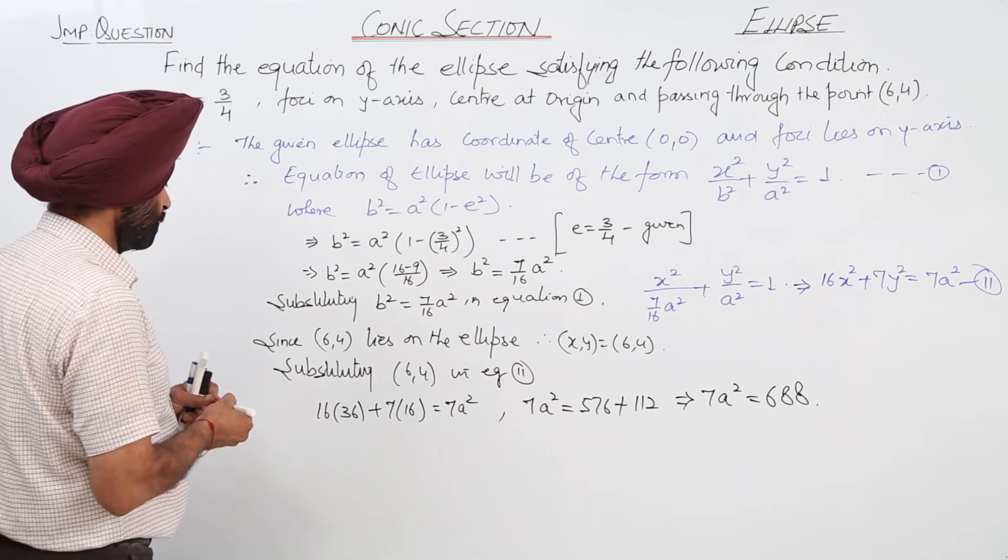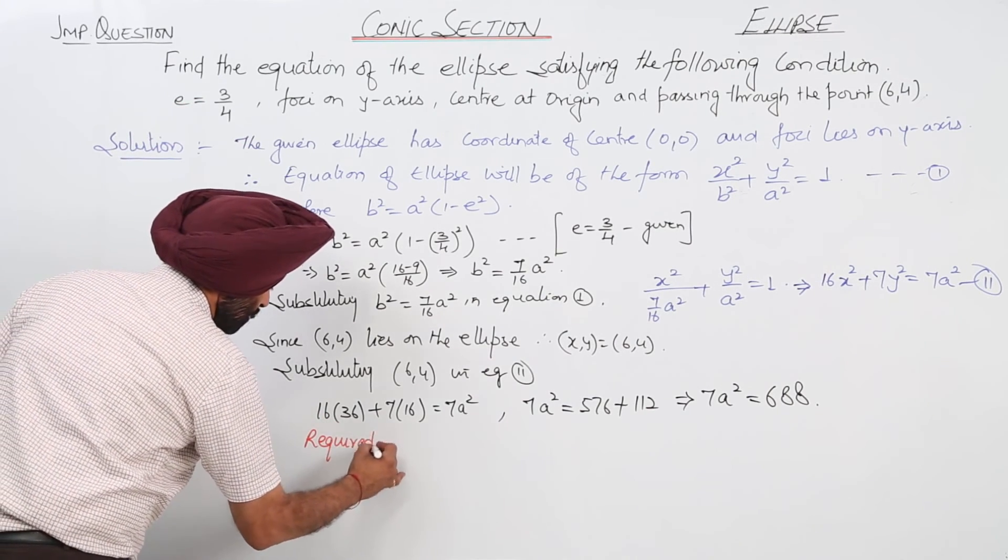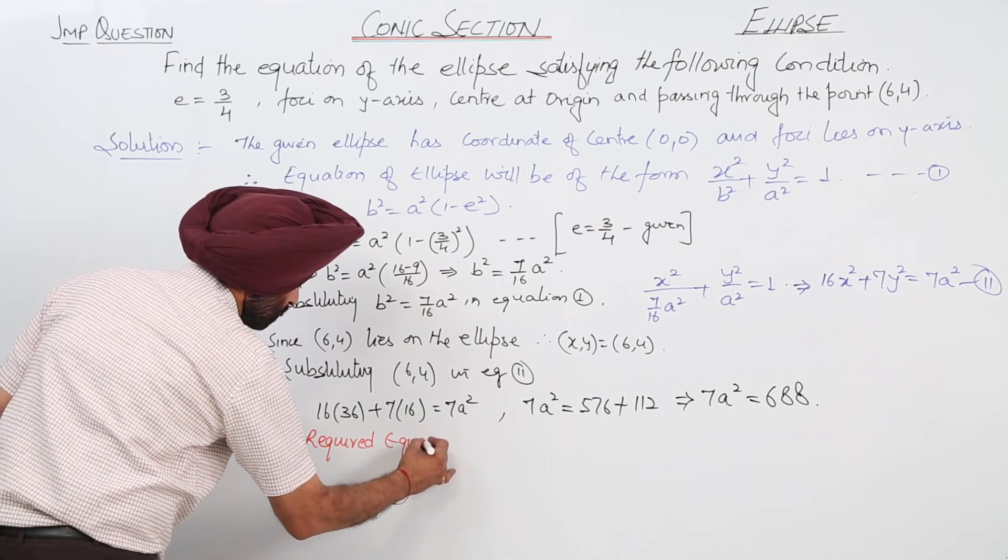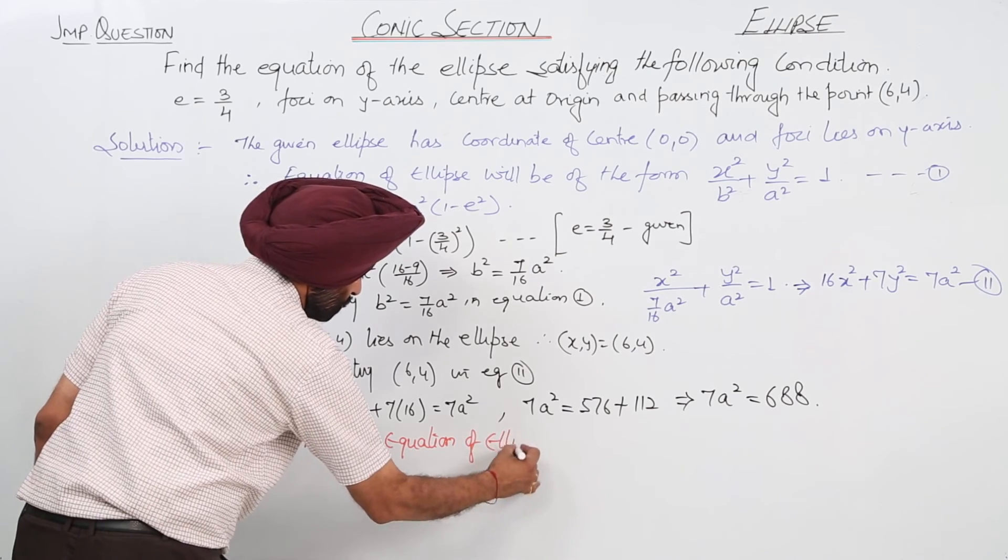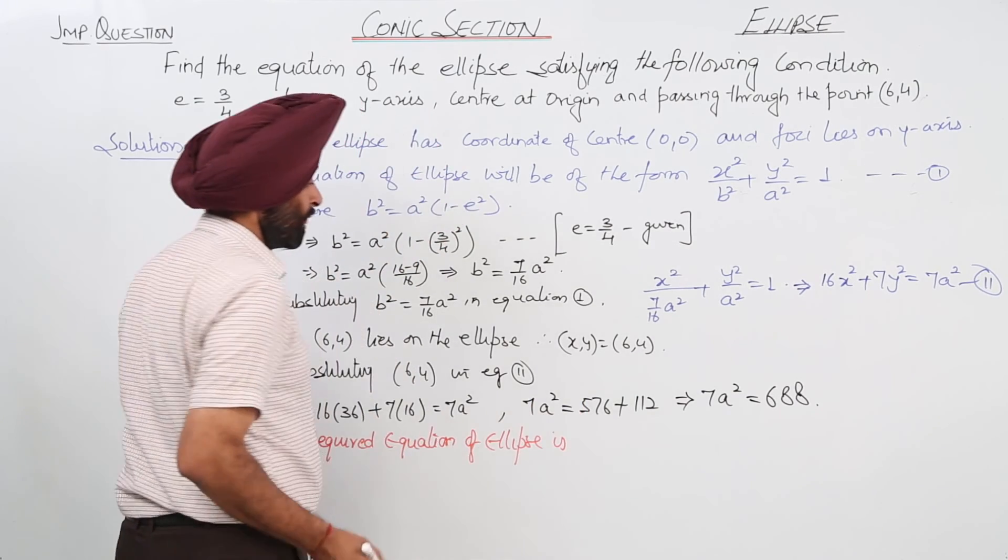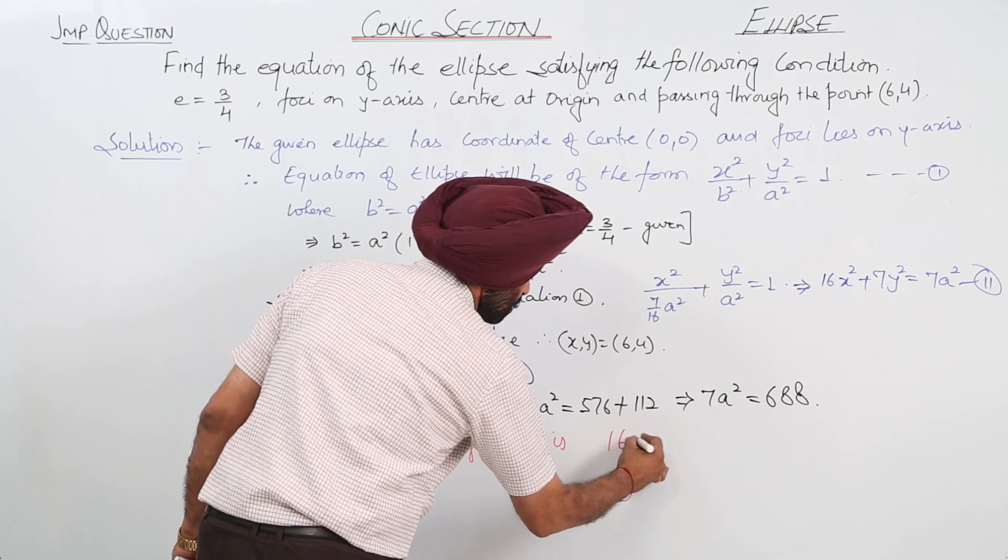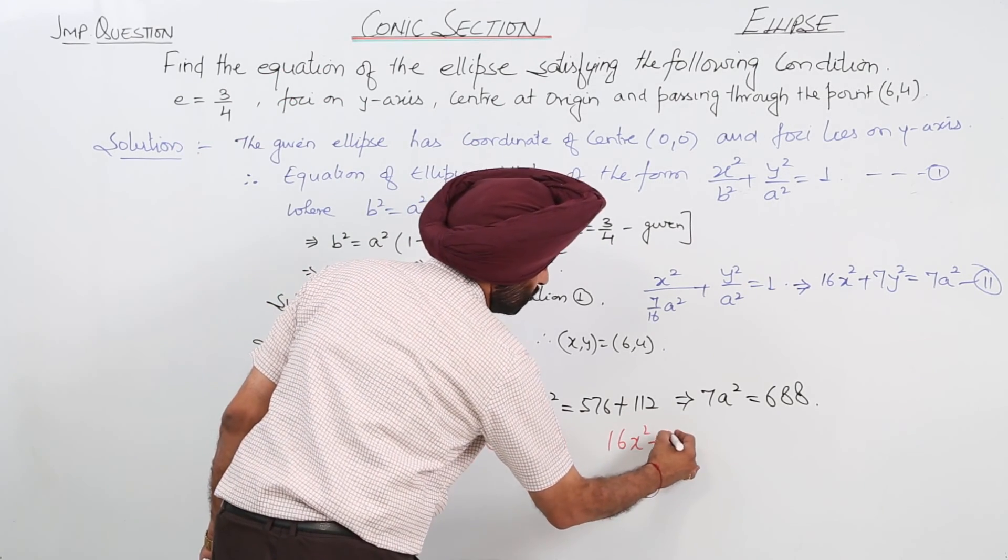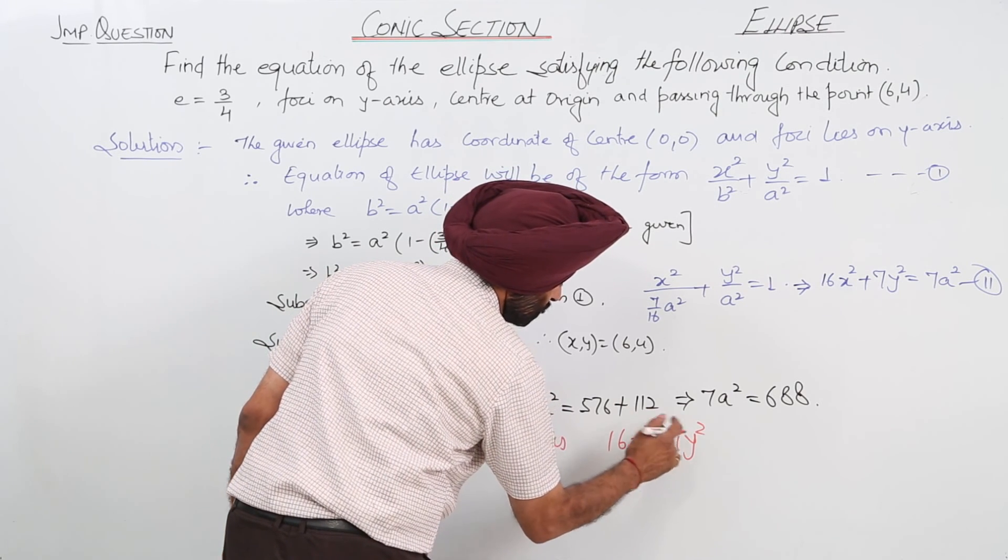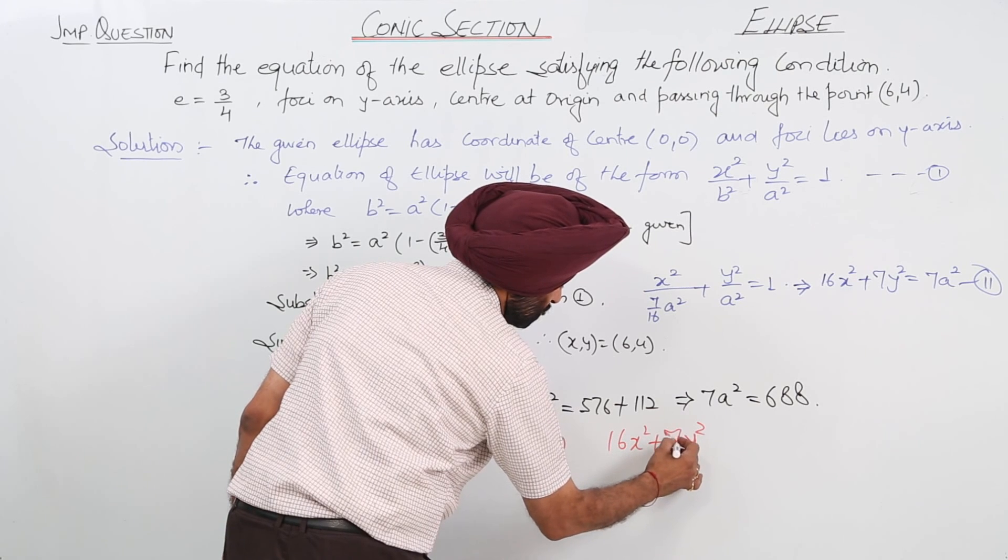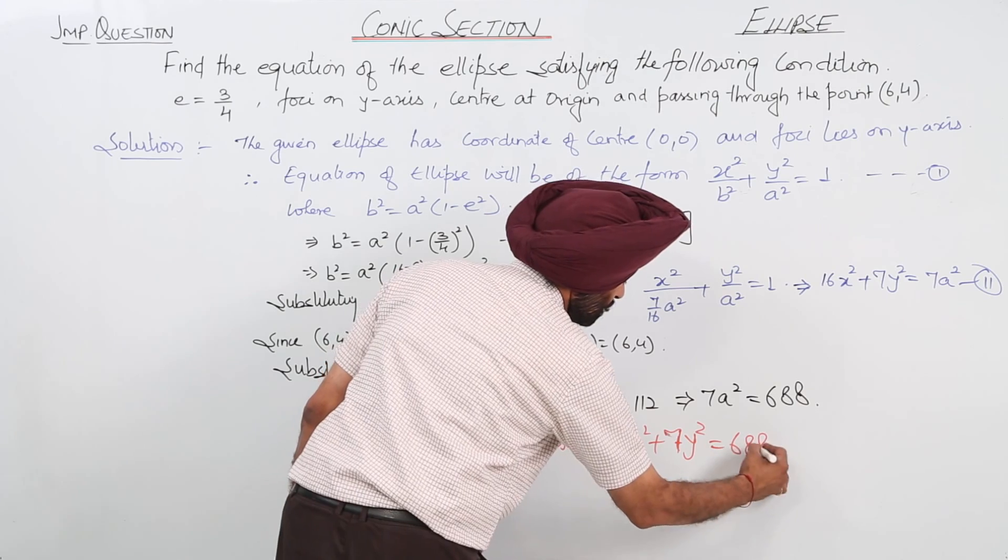Now, required equation of ellipse is... putting 7a² in equation number 2: 16x² plus 7y² is equal to 688.